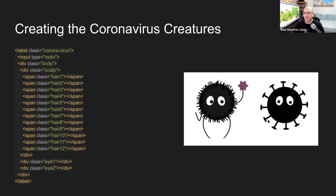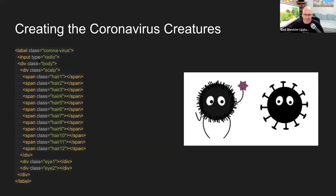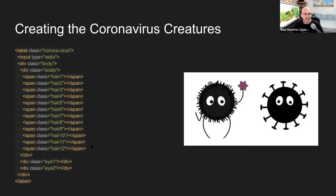The first thing I wanted to create was the coronavirus creature itself. For me, HTML is very important — it's not just throwing elements into a document. This is an object of HTML representing a coronavirus creature, and it needs to be very precise. I created a label HTML element with a class of 'coronavirus,' and inside I put an input type radio. The label and radio input are part of the game logic we'll talk about later. All the visual parts of the coronavirus creature start with a div class 'body,' which contains 12 hairs and both eyes.